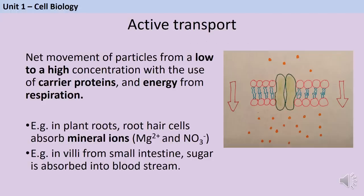Active transport is like the opposite of diffusion — it's the overall movement of particles from a low to a high concentration, using carrier proteins and energy from respiration. Tissues that do a lot of active transport have lots of mitochondria to provide energy. Active transport occurs anywhere tissues are absorbing more than 50% of a particular nutrient — for instance, in plant root hair cells absorbing mineral ions like magnesium and nitrate, and in the villi of the small intestine where sugar is absorbed into the bloodstream. It allows the organism to absorb over 50% of available nutrients, more than diffusion alone would allow.